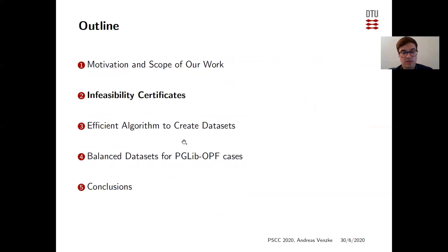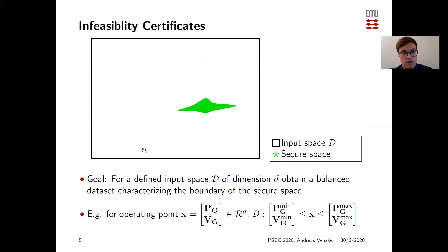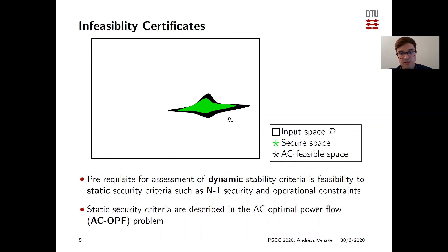The first step of our data set creation method uses infeasibility certificates. More formally, the goal is for a defined input space capital D of dimension lowercase d to obtain a balanced data set characterizing the boundary of the secure space — shown in green — encompassing both static and dynamic security criteria. The overall input space is characterized by taking the minimum and maximum limits from operational constraints. The prerequisite for dynamic stability assessment is feasibility to static security criteria, described by the AC optimal power flow problem, so the AC feasible space includes the secure space.